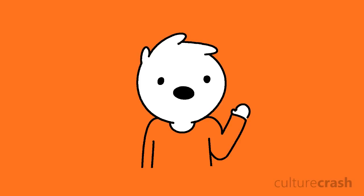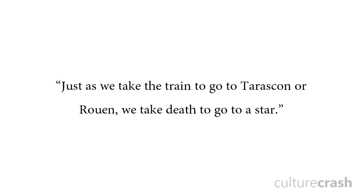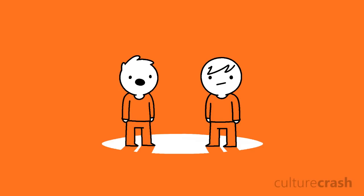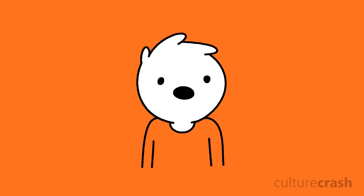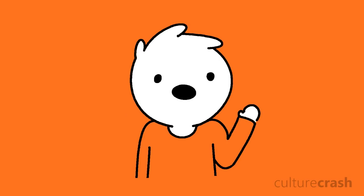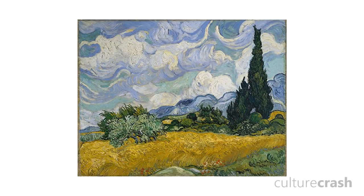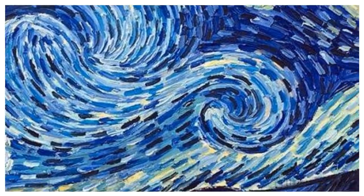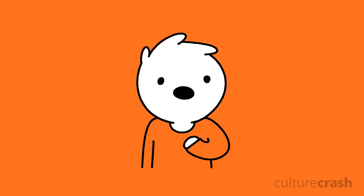A quote from Van Gogh may shed some light on what exactly this means: 'Just as we take the train to go to Tarascon or Rouen, we take death to go to a star.' That might also explain why he inconceivably thought of his work as a failure. He didn't enjoy dabbling in abstractionism and much preferred to draw inspiration from nature. The swirling of the sky, whilst visually pleasing to most, made Van Gogh anxious that he was straying from true representation of nature.